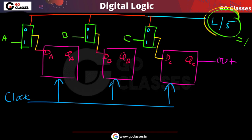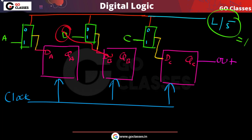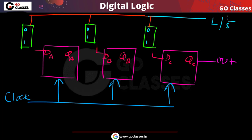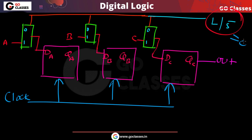When this control input is 1, we are doing parallel loading — A connects to DA, B connects to DB, C connects to DC. So when LS bar equals 1, we perform parallel load.